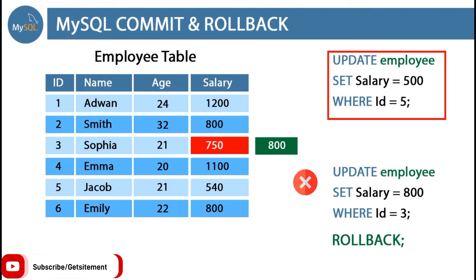But I want to rollback only for Sophia — her ID is 3 — and I don't want to rollback Jacob's salary update. To solve this problem, we use another command named COMMIT. Commit saves all the previous lines of code permanently. The first UPDATE for Jacob executes, then COMMIT runs, meaning that record is saved permanently. Then if I mistakenly update Sophia's salary, I can rollback only that change by executing the ROLLBACK command.